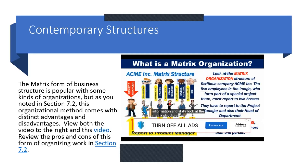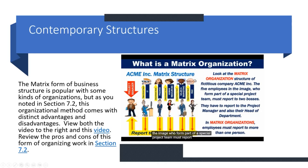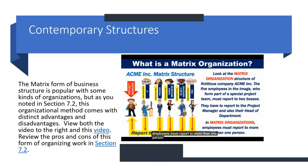Look at the matrix structure of the fictitious company ACME Inc. The five employees in the image, who form part of a special project team, must report to two bosses — the project manager and also their head of department. In matrix organizations, employees must report to more than one person.